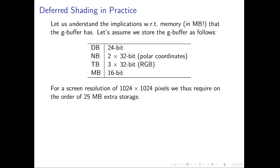Let's understand how much memory we actually need to store the GBuffer in megabytes. Assuming: depth stored with 24 bits per value (a very common representation), a normal buffer storing two 32-bit floating-point values in polar coordinates (though other representations compress even better), a diffuse albedo texture storing three times 32-bit RGB values (which could also be compressed), and a material buffer storing 16 bits allowing up to 65,000 individual materials.